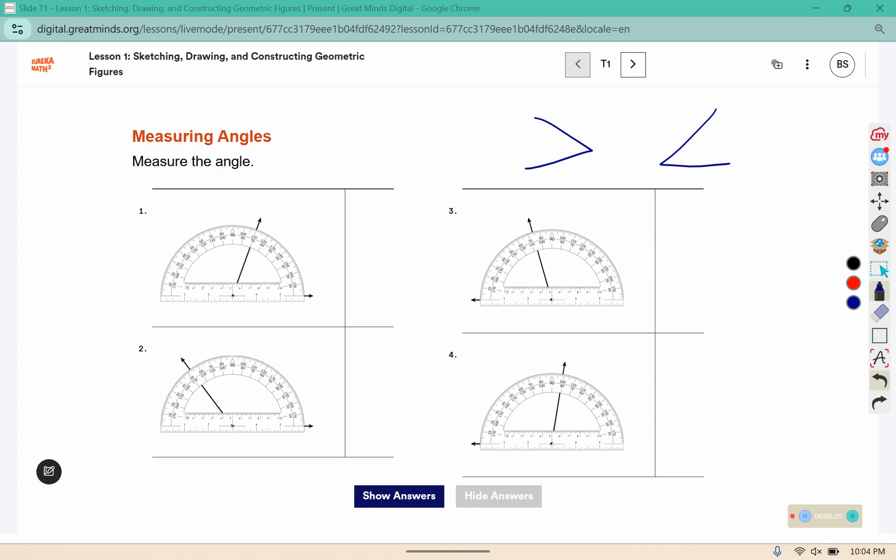For obtuse angles, those are greater than 90, they open up more than the L. We want to use the larger of the two numbers.